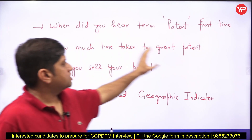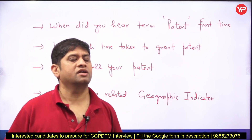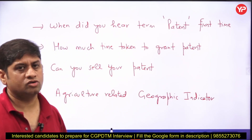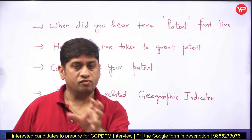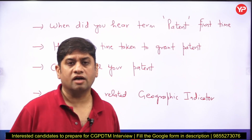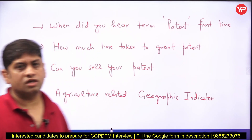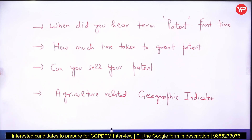How much time is taken to grant a patent? You must have studied that 12 to 18 months are typically taken to grant a patent. Which organization grants the patent, and which organization advocates on the infringement of the patent?